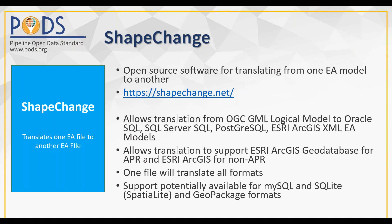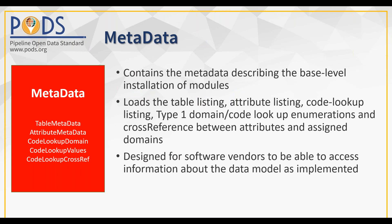Metadata — data about your data — is very important and a very important module. The metadata contains metadata about the tables, the attributes, code lists and domain lists in the model, and code lookup cross-references. The metadata module loads the tables, the attributes, the code lookups, all the enumerations, and is responsible for describing the base level implementation of all of these elements. They're pretty important in terms of describing what is in your model and the data, domains, and their associated values.